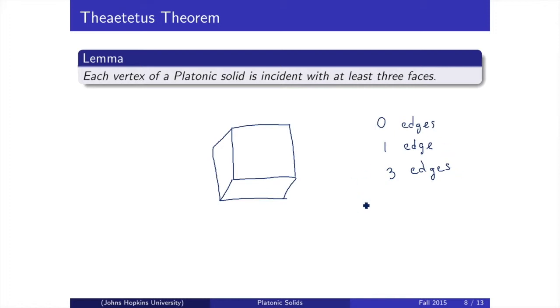Recall that Q, in our Schläfli symbol, is the number of faces attached to each vertex. Hence, we now have a lower bound for Q, namely 3.